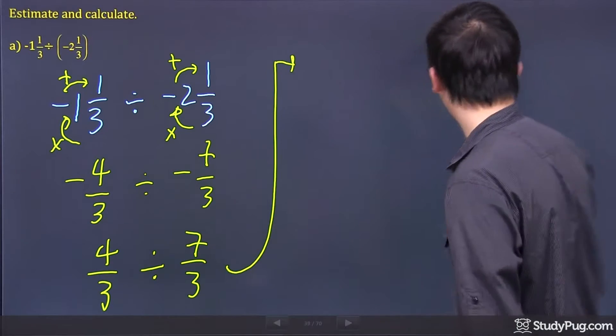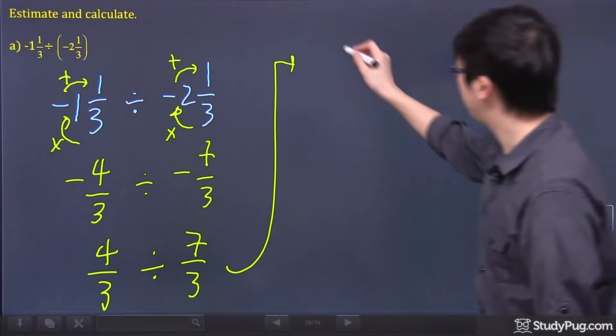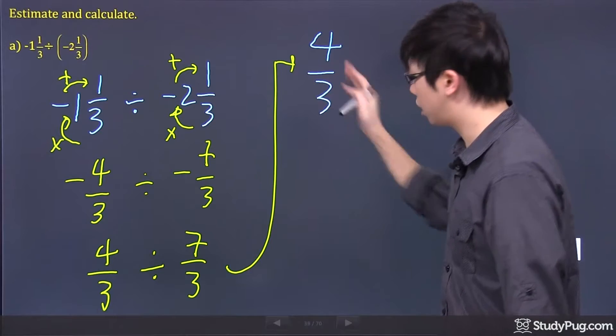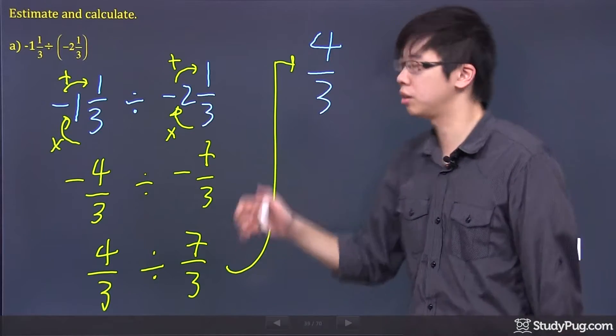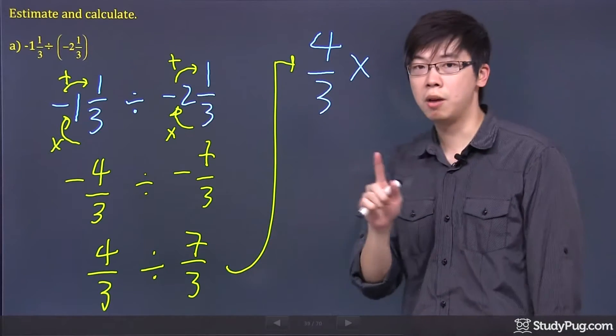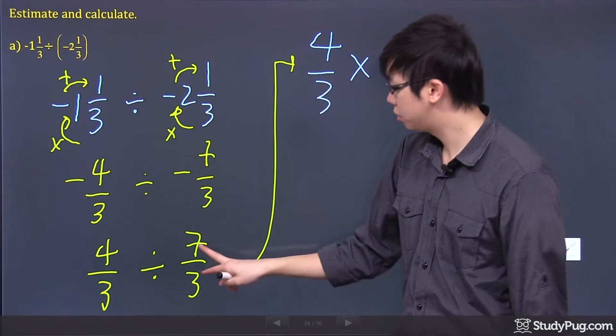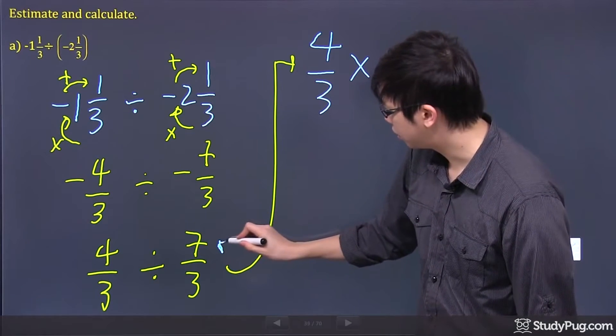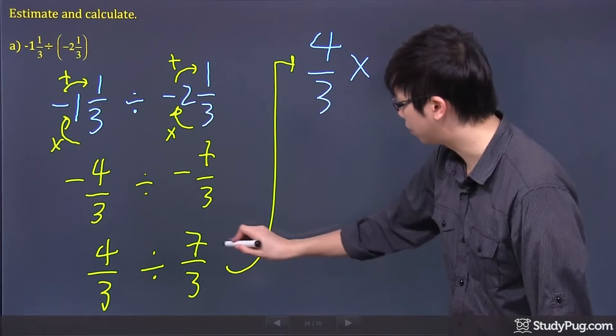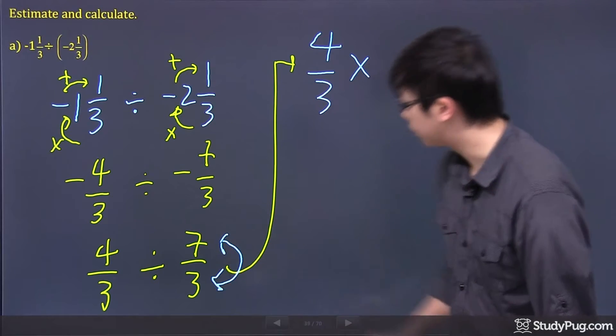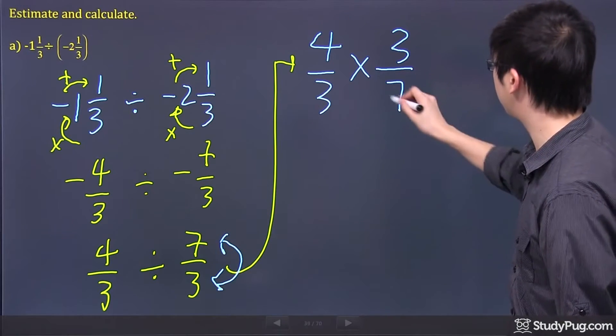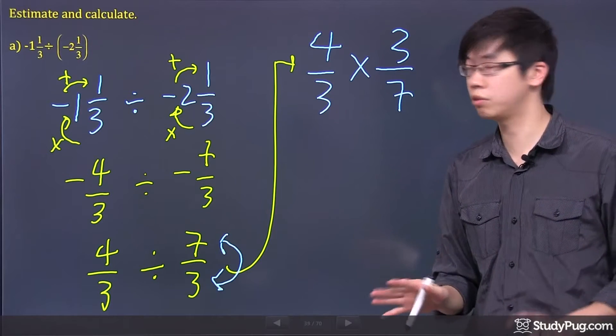What happened is, if I just kind of bring the work up here, let's change the colored pen. 4 over 3, keep the first part the same, but we can actually change it into multiplying. How do we do that? Simply flip the 7 with the 3. Flip these two. So we got 3 over 7. Makes sense so far?